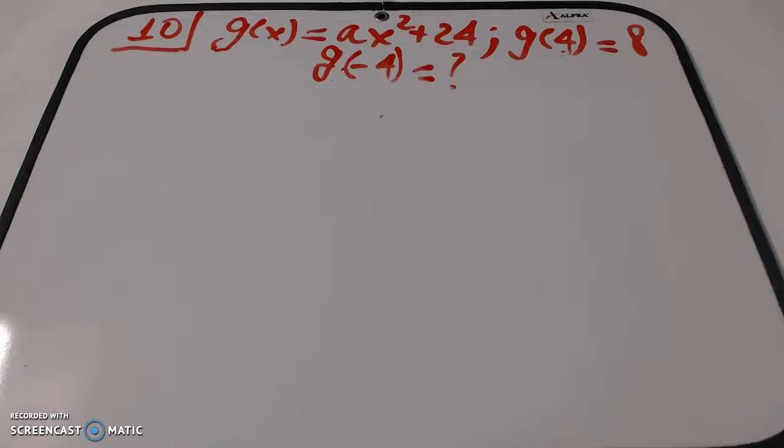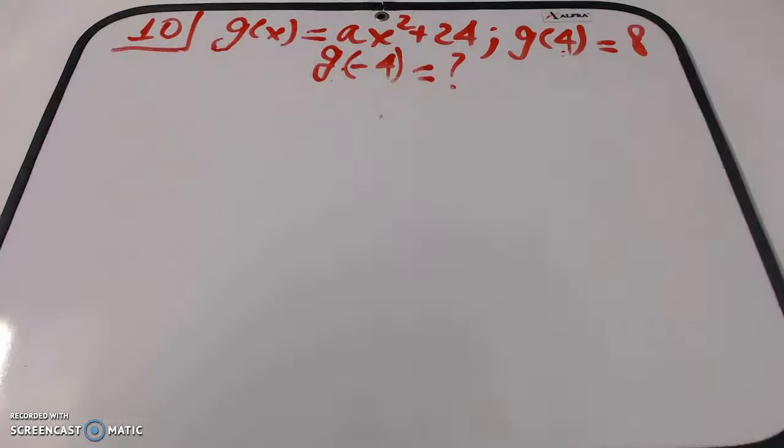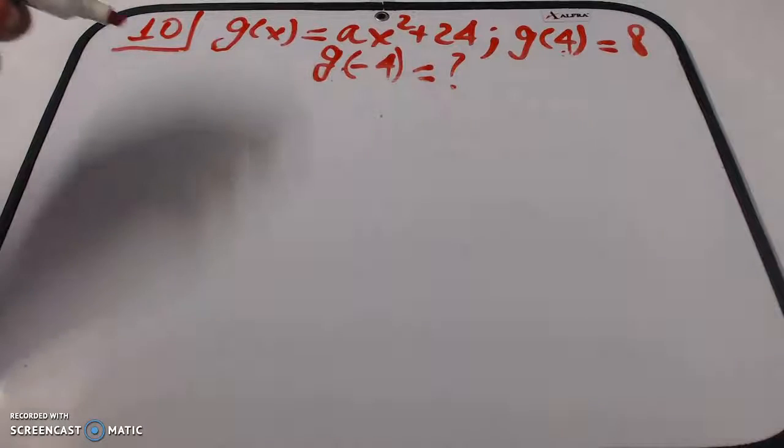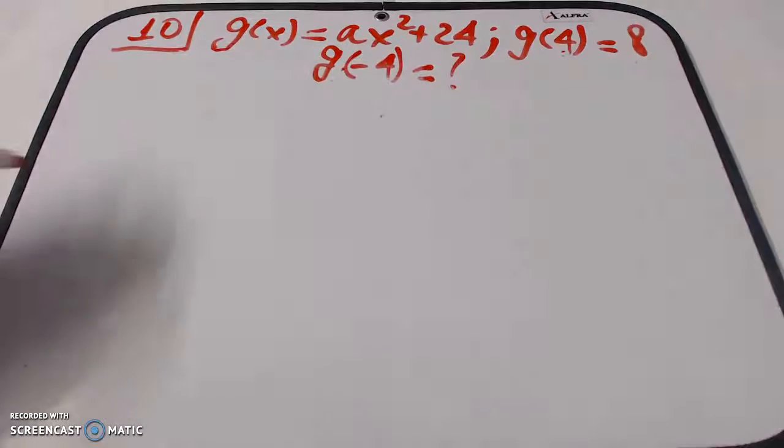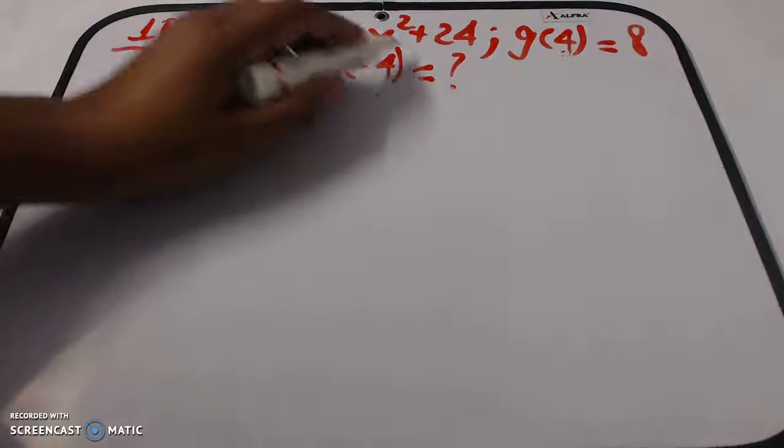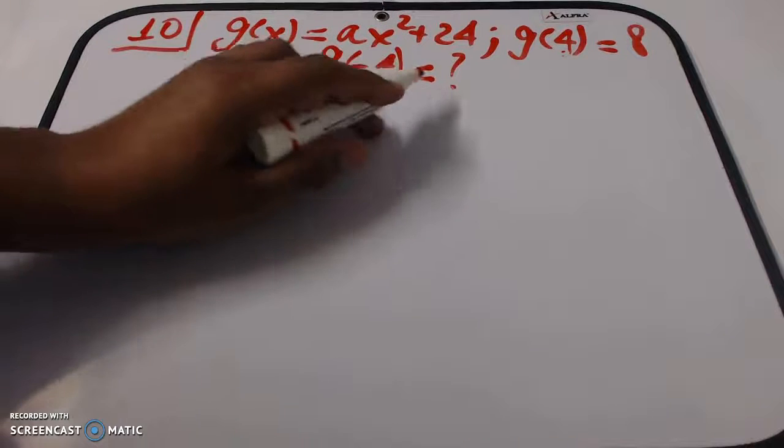This is problem 10 from the new SAT Practice Test 1, Section 3. We're given the function g(x) = ax² + 24, and a specific value: when x equals 4, the function equals 8. The question is, what is the y value of the function when x equals -4?